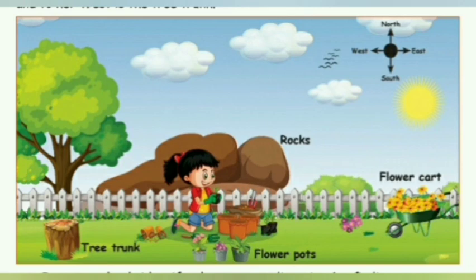Here, a small girl called Mira is at the center of the ground. To her south there is a flower pot, and to her north there are rocks. To her east there is a flower cart, and to her west there is a tree trunk. Thus, directions help us to reach a place without getting lost and to identify the position of things.